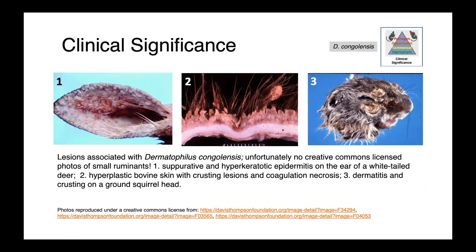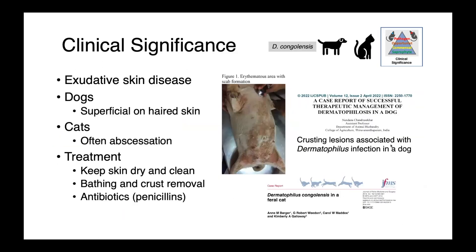In dogs and cats, we can see exudative skin disease. In dogs, it's typically superficial on haired skin, and in cats it's oftentimes associated with abscesses. Treatment of these infections is to keep the skin clean and dry, bathing and crust removal, as well as systemic antimicrobials — typically the penicillins. Here you can see a dog with a Dermatophilus infection; you can appreciate that there is erythema, so reddening, and then crusty scab formation as well.